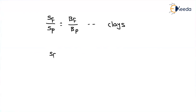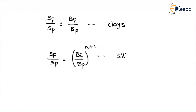Similarly, for silty soils, the formula is: settlement of the footing divided by settlement of the plate equals (BF divided by DP) to the power of N+1. This is generally used for silty soils, and if no N value is given, we consider N as 0.5. So from the known settlement value we can find out the allowable bearing pressure acting on the footing.